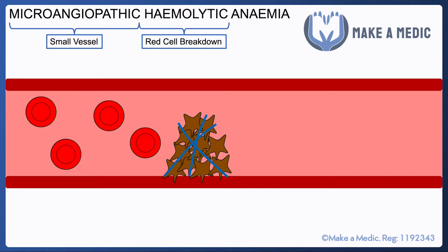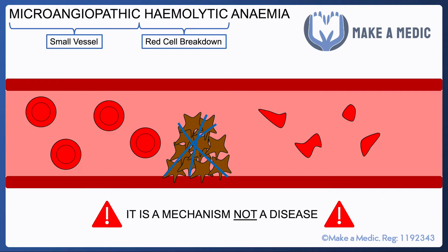The platelet plug means that red cells are no longer able to go through the small vessels unscathed — they end up being shredded into small fragments. The key point is that microangiopathic haemolytic anaemia is just a description of a mechanism of red cell breakdown. It's not a disease in itself and it certainly isn't a diagnosis; it just means that red cells are being broken down in small vessels.